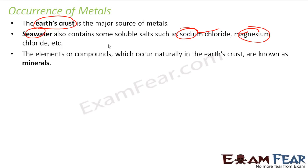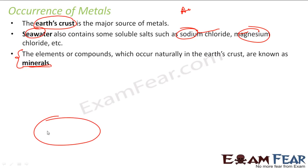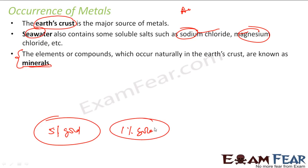The elements or compounds which occur naturally in the earth crust are called minerals. For example, gold, silver, and copper occur naturally and they are called minerals. So you might have a big rock which has, let's suppose, 5% gold — that will also be called a mineral. Another rock with 1% gold is also called a mineral.